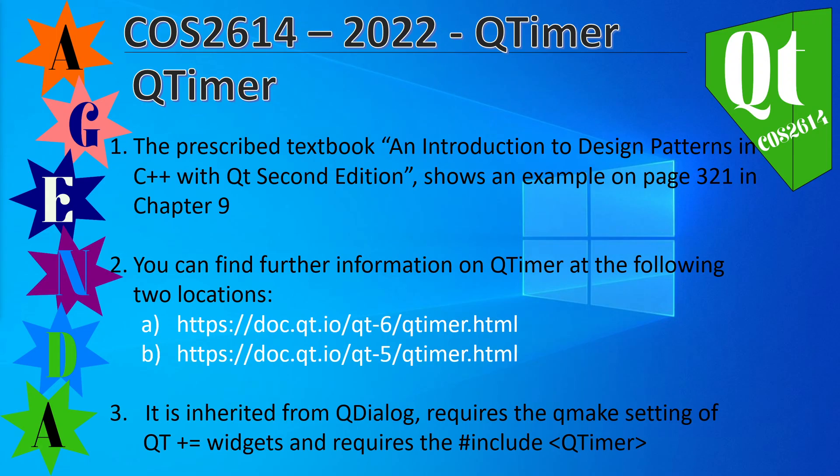QTimers are discussed on page 321 in chapter 9 of the prescribed textbook, 'An Introduction to Design Patterns in C++ with Qt', second edition. Further information on QTimer can be found at two locations — one for Qt 6 and one for Qt 5, since Qt 4 has reached end of life. It is inherited from QDialog, requires the QMake setting of Qt plus widgets, and also requires the include QTimer header.